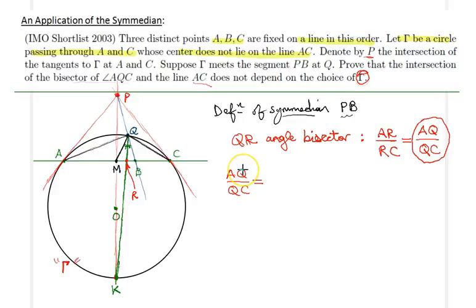AQ over QC, you can focus on triangle QAC. Applying the law of sines, we realize that AQ over QC equals sine of angle ACQ divided by sine of angle CAQ.